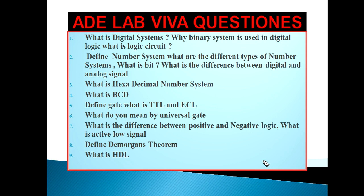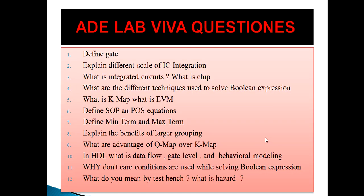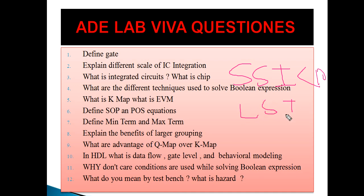Next, define gate — a gate is an electronic device with one or more inputs and only one output. Explain the different scales of IC integration. The scales are SSI, MSI, LSI, and VLSI. SSI stands for Small Scale Integration, used when the number of gates is less than 10. LSI is used when gates are less than 50. MSI stands for Medium Scale Integration, used when gates are less than 100. The last one is Large Scale Integration.